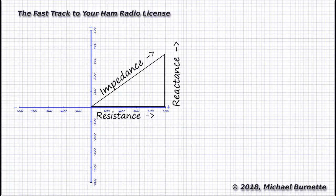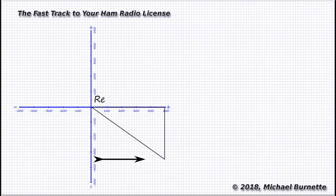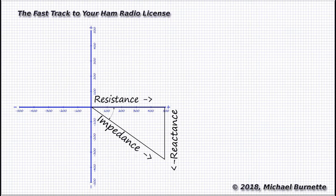In this example, the reactance is more inductive than capacitive, so we end up with a positive value for reactance. We also end up with a positive phase angle. If the reactance was more capacitive than inductive, we'd plot a negative number on the y-axis, and we'd end up with a triangle like this one. Now, that triangle shows a negative phase angle.